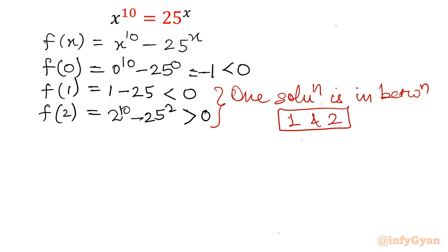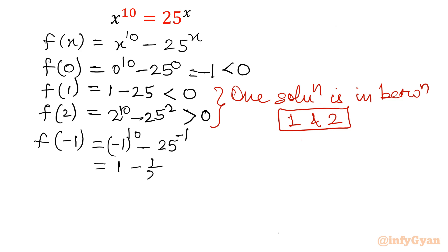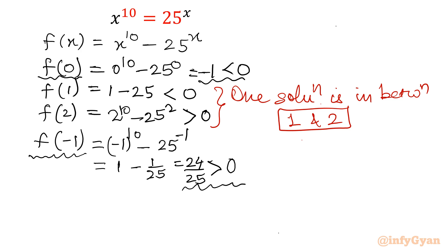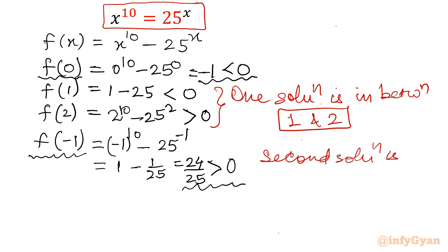Now on the negative side: f(0) is negative 1. f(-1) equals (-1) power 10 minus 25 power (-1), which is positive 1 minus 1 over 25, giving 24 over 25, which is positive. Since f(-1) is positive and f(0) is negative, a second solution of this exponential equation lies between 0 and negative 1.